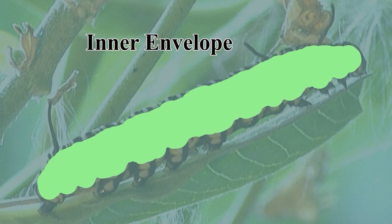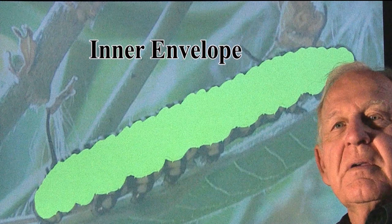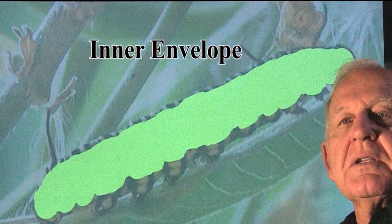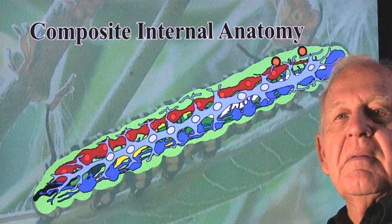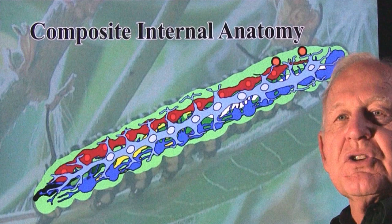Children are aware that a caterpillar is soft and squishy. They'll frequently call it a worm, which represents a body form filled with fluid — no bones, no shells, no hard parts in the body of the caterpillar. Inside the body of this elongated worm-like structure, the monarch caterpillar, there are lots of internal organs.